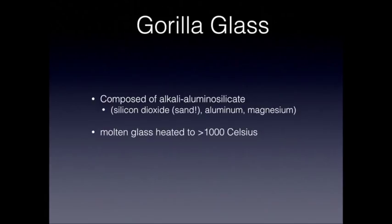Let's first start with gorilla glass. Gorilla glass is a true glass — it's composed of an alkali aluminosilicate material. It contains primarily sand, or silicon dioxide, and also has other smaller elements including aluminum, magnesium, and some others. The production of gorilla glass starts with heating up this silicon dioxide to greater than a thousand degrees Celsius until it turns into a molten liquid.